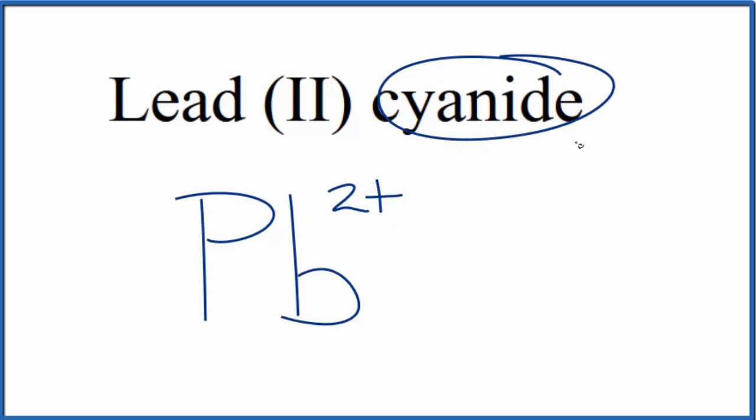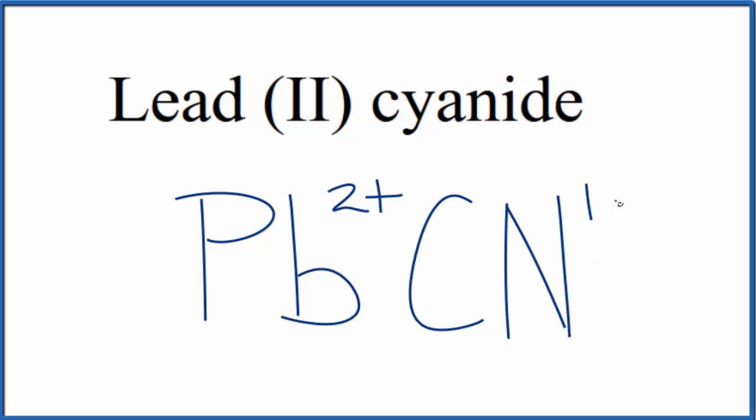Cyanide, you won't find that on the periodic table. You need to either memorize that the cyanide ion is CN and has an ionic charge of 1-, or if you're allowed you can look it up on a table of polyatomic ions.